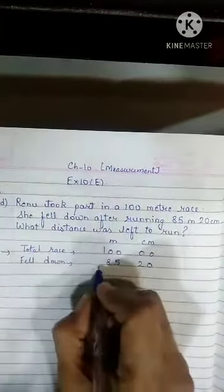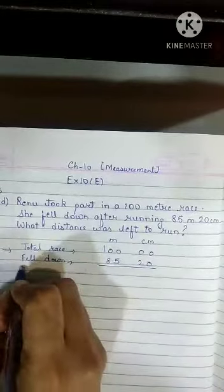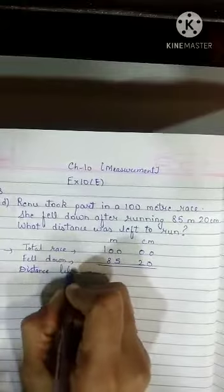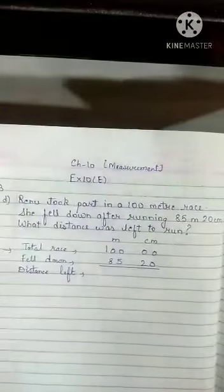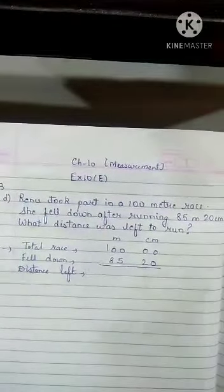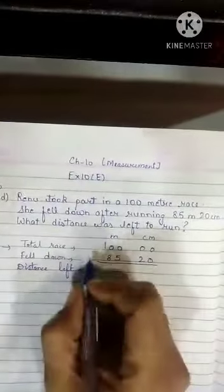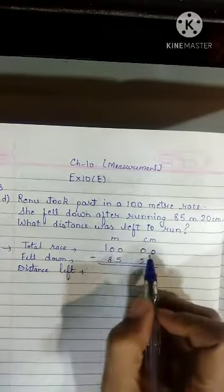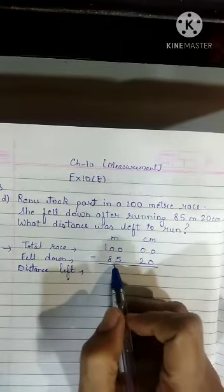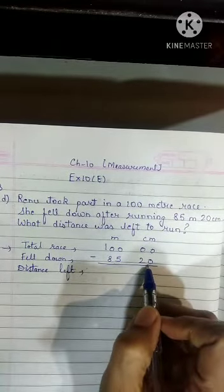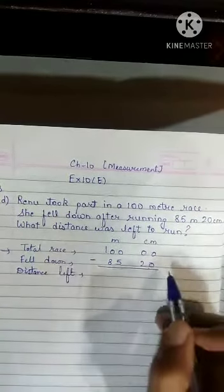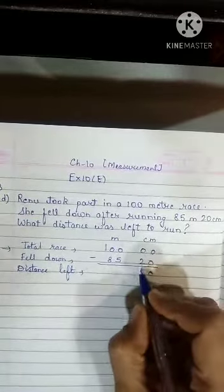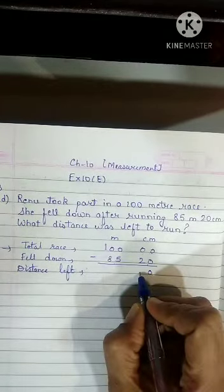What we have to find out is the distance left. Now children, what do we do? We will subtract. The total race was 100 meters and she fell down after completing 85 meter 20 centimeters. So how much distance was left? 0 minus 0 is 0. 0 minus 2 — can we do? No. We will borrow.